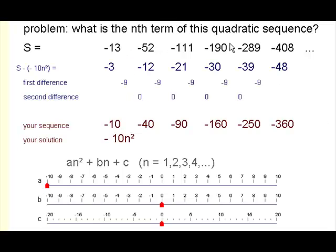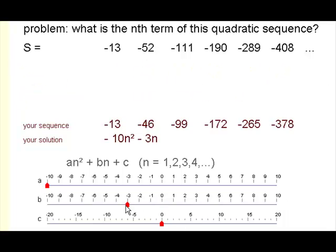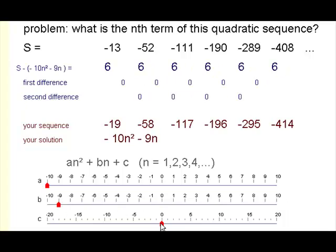Take that away from the original sequence, we've got this. Now we've got a linear sequence which is minus 9n plus 6, plus 6. And we've done it.